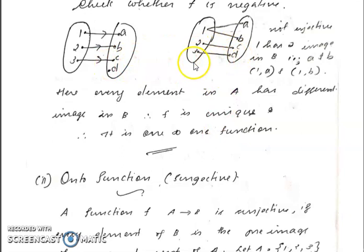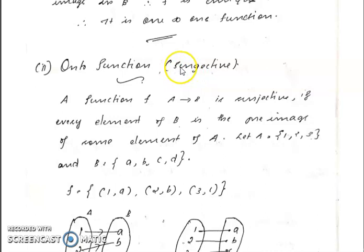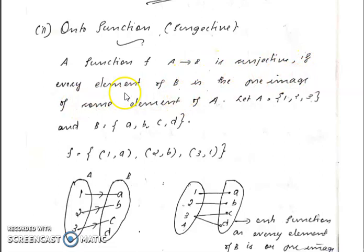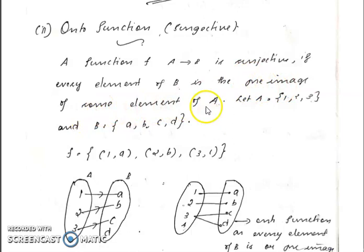Onto function, otherwise called surjective function. A function F from A to B is surjective if every element of B is the pre-image of some element of A. For example, A = {1,2,3}, B = {A, B, C, D}: if 1 maps to A, 2 maps to B, 3 maps to C, then D has no pre-image.